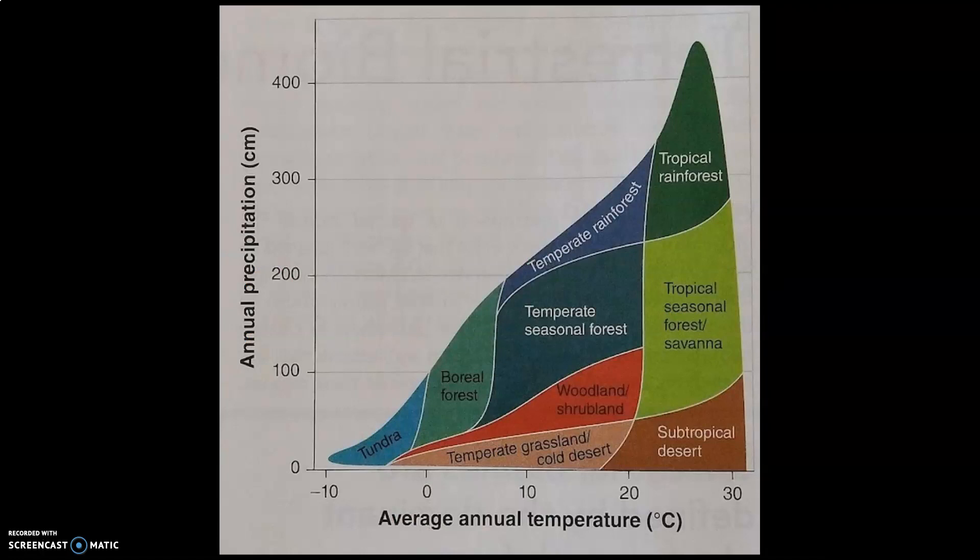This is another way that we can categorize them, and again it's based upon the temperature and the annual precipitation. So of course the temperature is going to fluctuate throughout the year, and same with the precipitation. Based upon those two factors is going to determine which biome you're in, because different conditions allow for different things to grow.